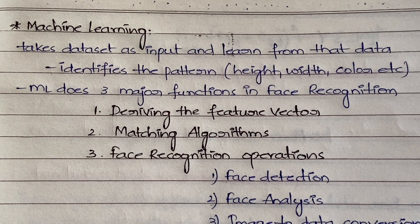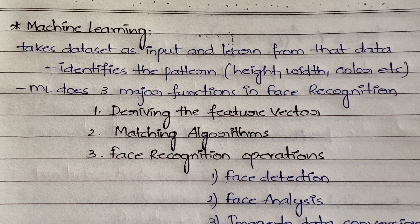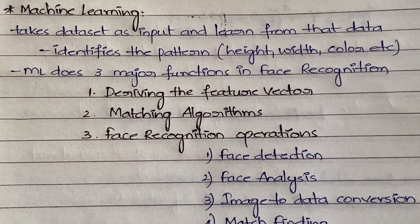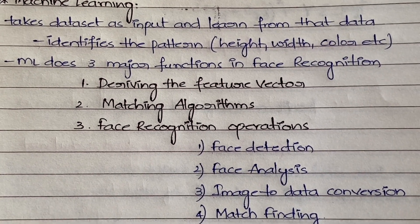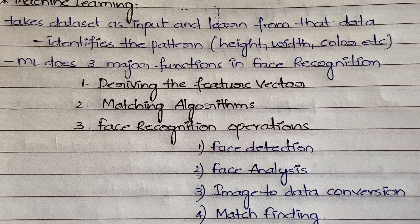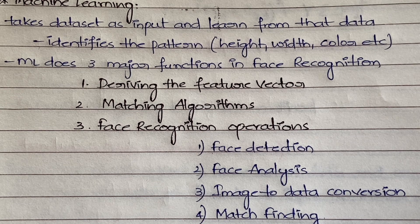The matching algorithms compare the stored data with what you are giving now. The third step involves face recognition operations — there are four total. Number one is face detection: when facing the camera, it detects whether a face is present or not. Number two is face analysis: it analyzes all features of the face such as image height, width, distance, and color.